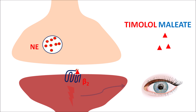Since timolol maleate also blocks beta-1 receptors, it reduces heart rate and cardiac output, which leads to decreased blood pressure. Therefore, timolol maleate can also be used in the treatment of ocular hypertension.